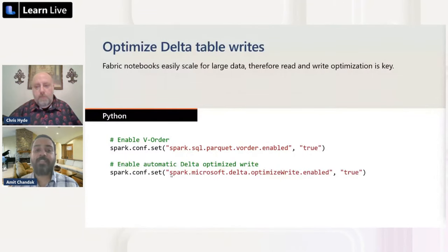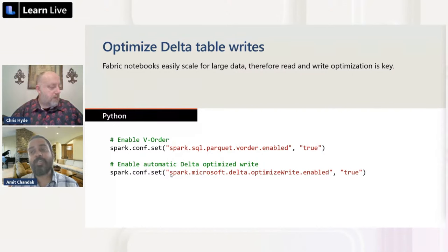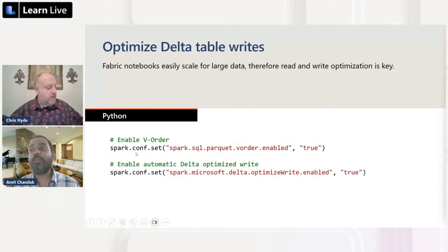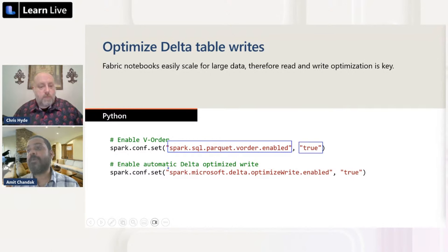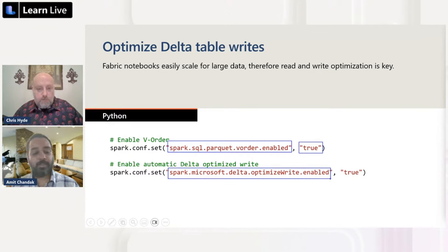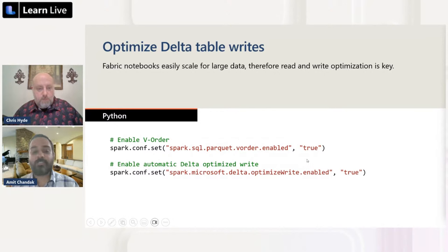Fabric notebooks can easily scale to large data, so write optimization is key for performance. There are two optimization functions: `spark.config.set('spark.sql.parquet.vorder.enable', 'true')` and `spark.config.set('spark.microsoft.delta.optimizeWrite.enable', 'true')`. Let me quickly show these in action.